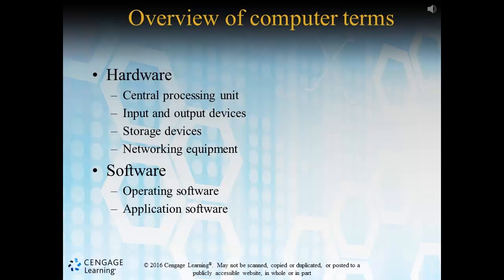Networking equipment are those items that allow a computer to connect to a network, enabling us all to interact with others on it. This would include wires, modems, routers, etc. that physically and wirelessly connect a device to the network or internet. Moving on to software, all things are developed on a specific operating system platform — think Windows, Apple, etc. Those operating systems consist of a collection of programs that control how the hardware interacts and processes requests. Application software are those programs that a user executes for a specific purpose — for example, my operating system is Windows 10 and the application software I'm currently using is Microsoft PowerPoint.